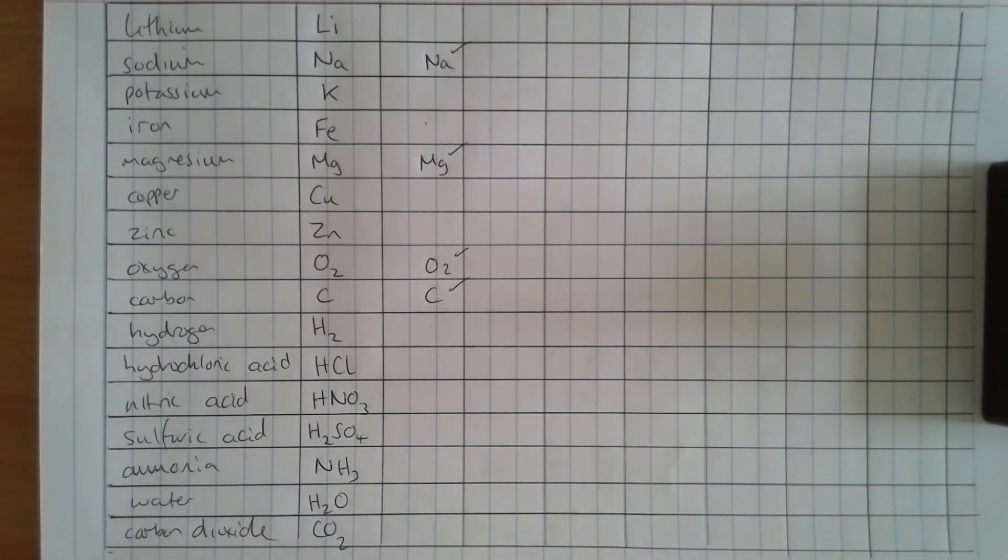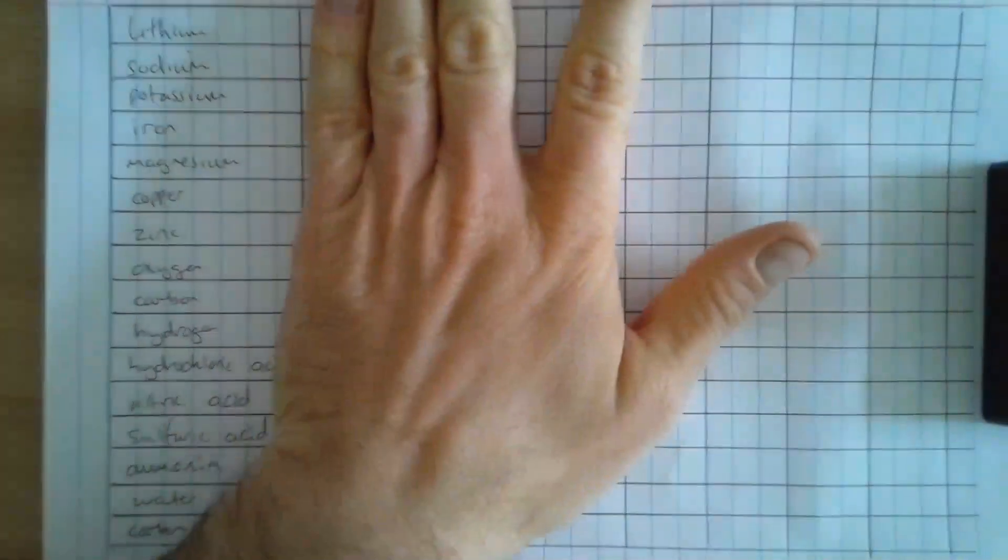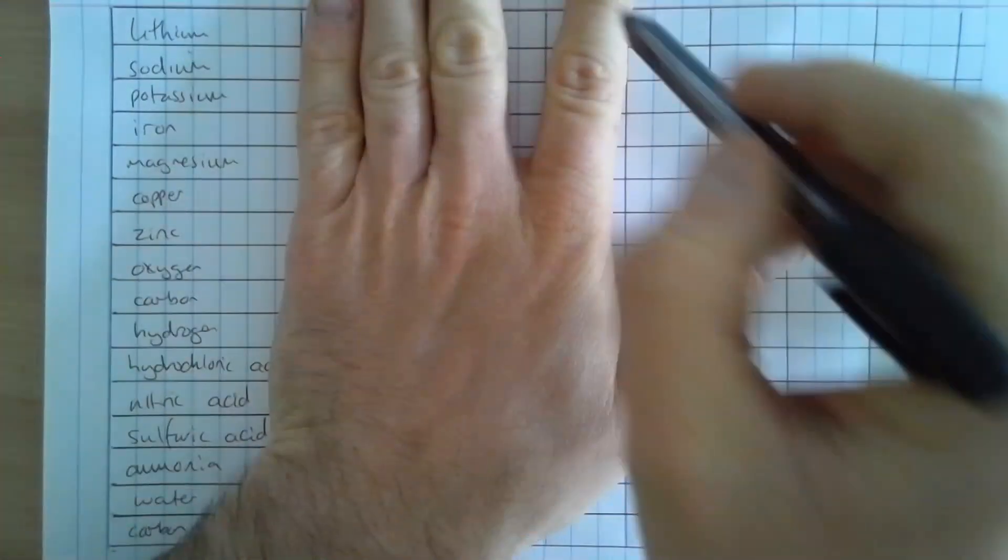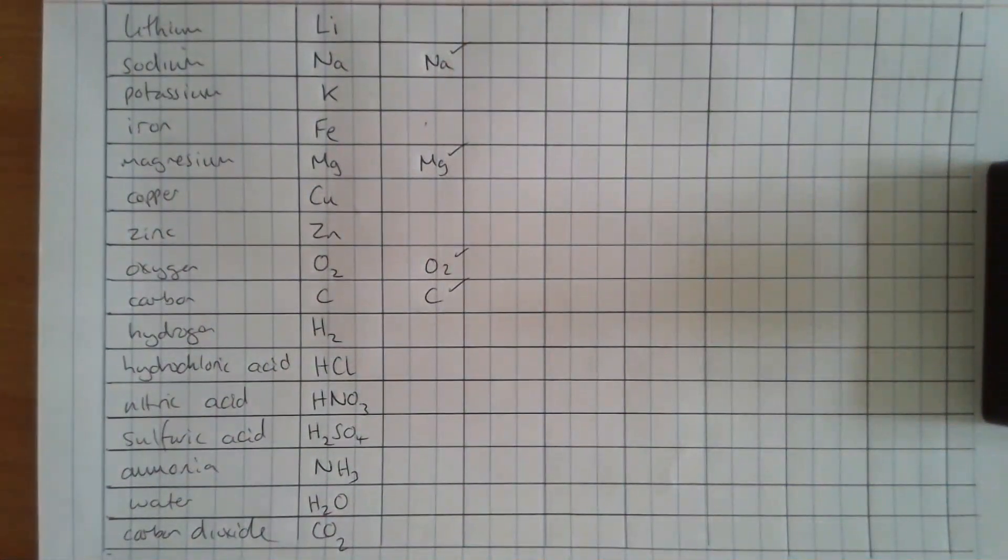So this is the look, cover, write, check, repeat method. We look at the list of the things we need to know. We can cover that with our hand. We write them down. That's one option.